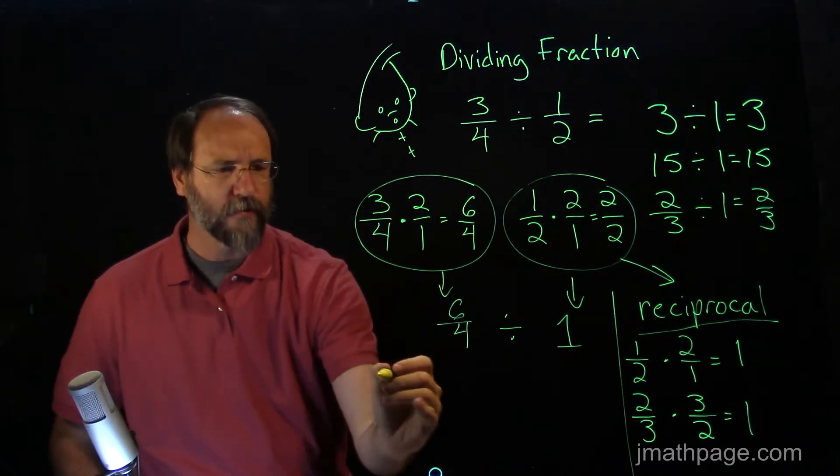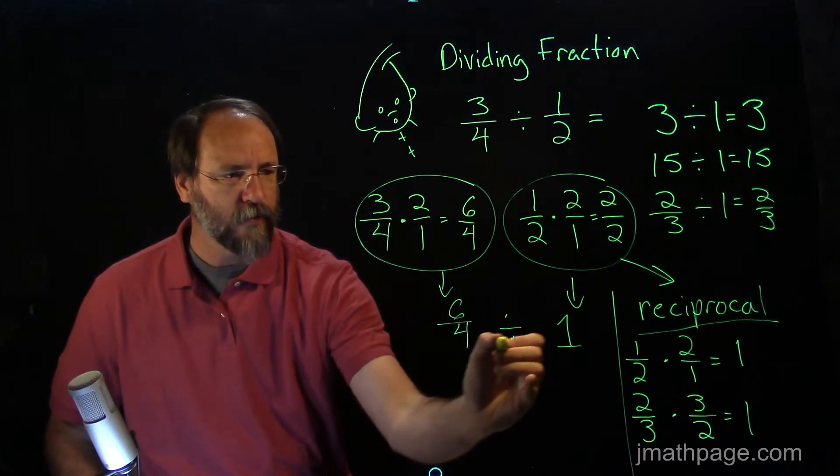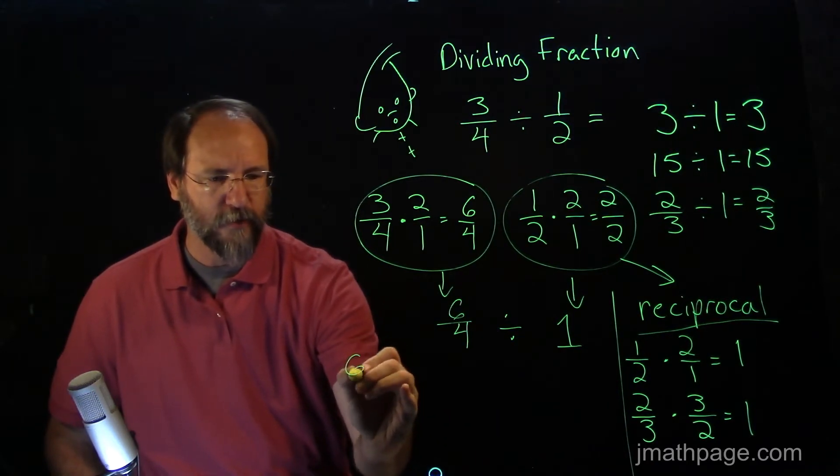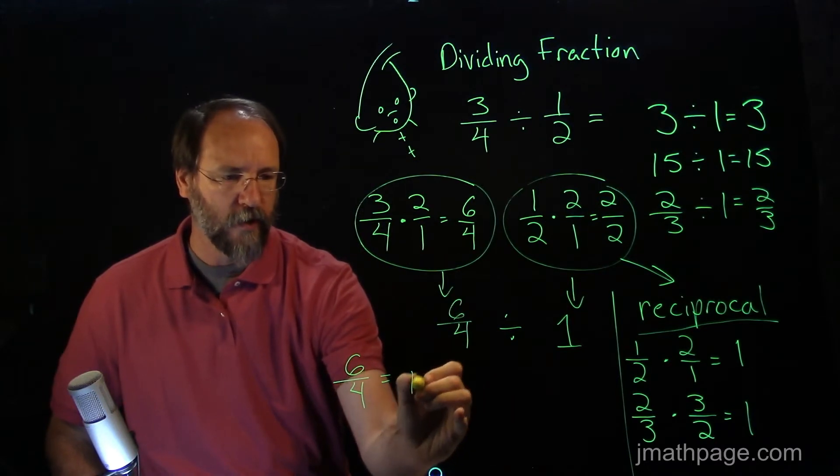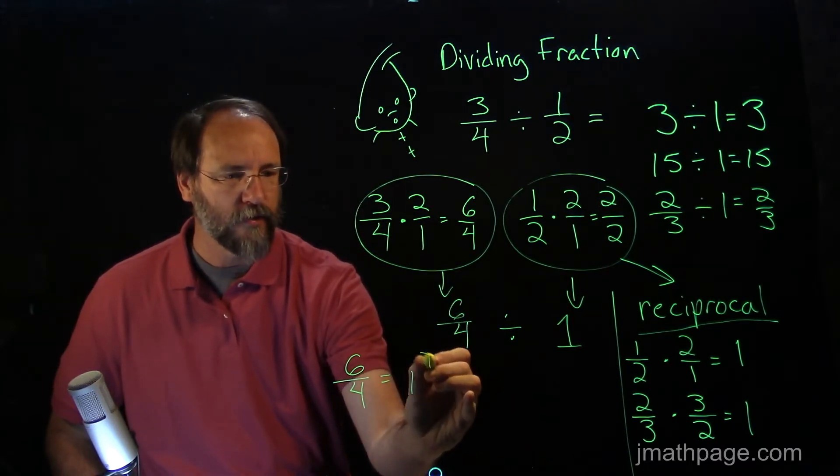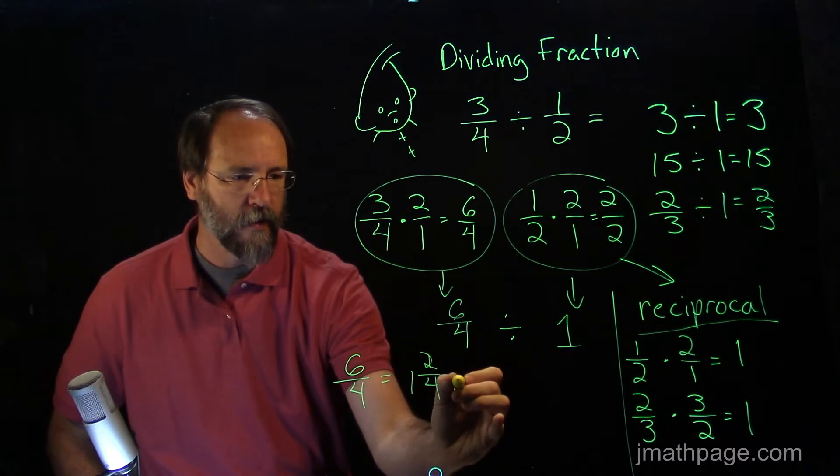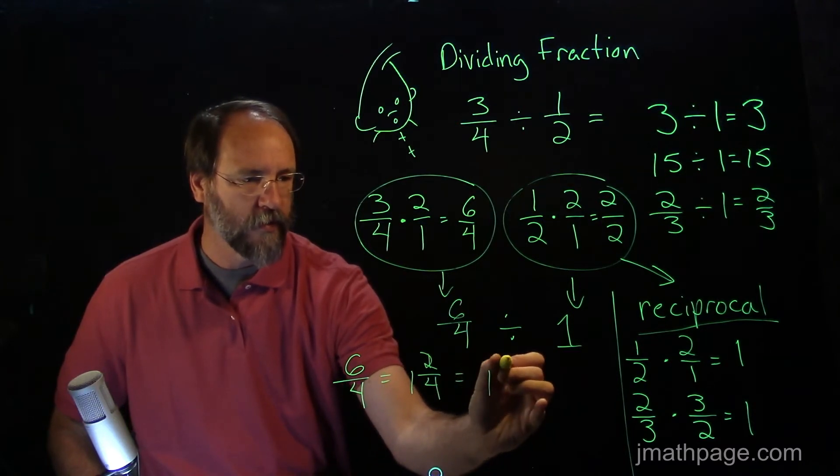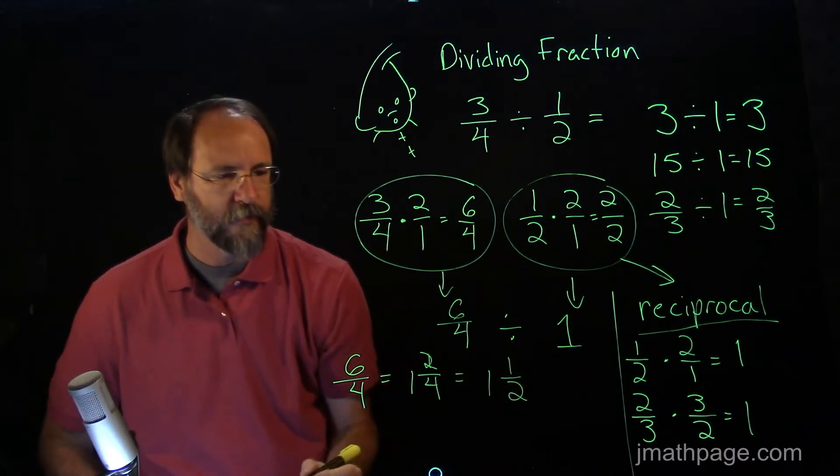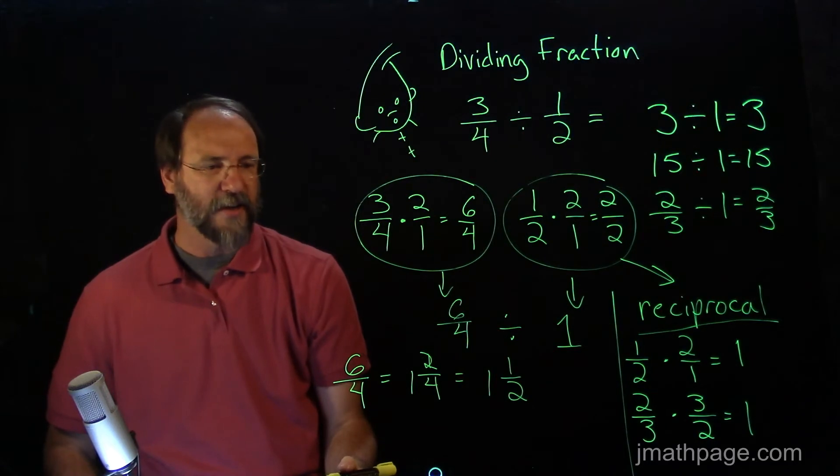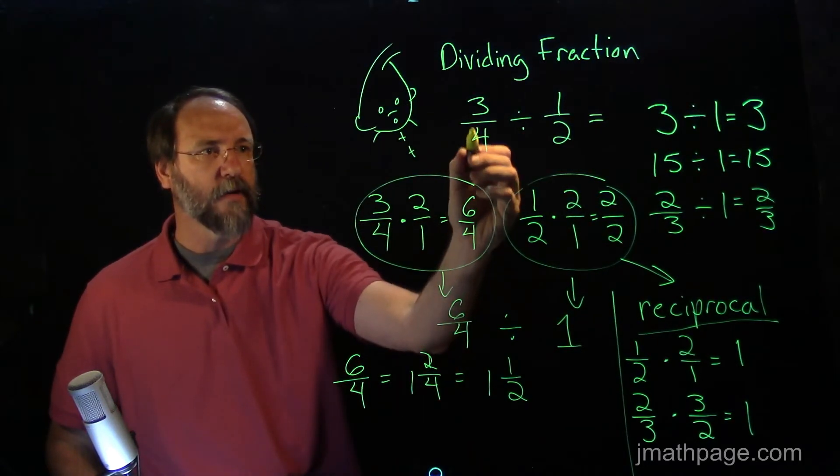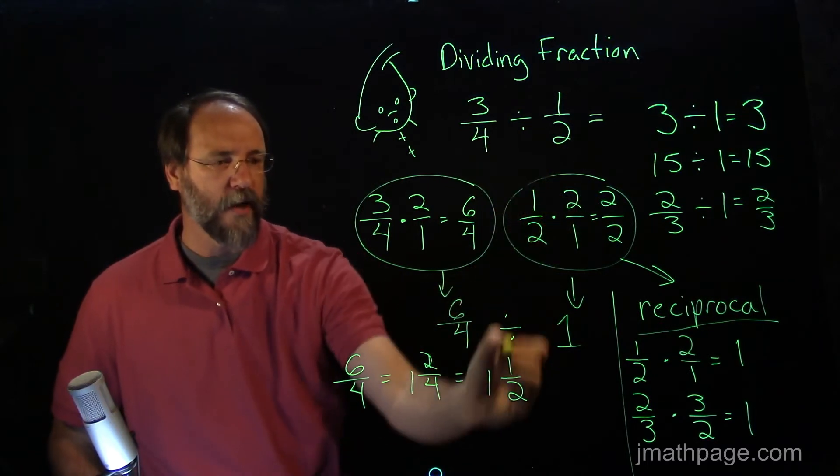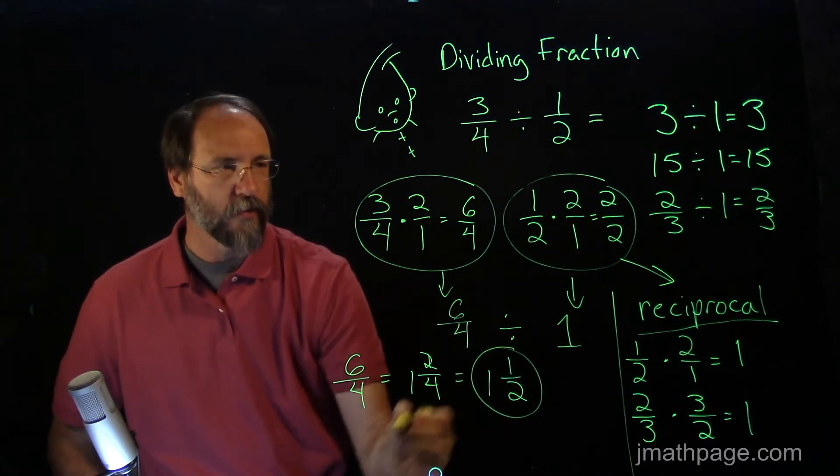Now here's what's nice about six-fourths. Six-fourths divided by one will give us six-fourths, which is the same thing as one and two-fourths, or the same as one and one-half. Now here's where it gets interesting. What we're saying now is that three-fourths divided by one-half is equal to one-and-a-half.